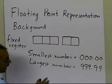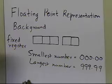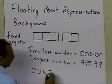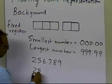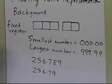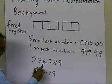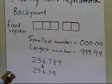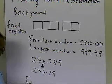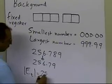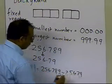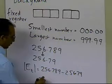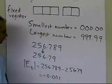Now, if you had a number which had more than two decimal places — let's suppose you had 256.789 — what you would have to do is represent that number as 256.79 if you were rounding it off. If you were rounding off that number, not chopping it, this would get represented as 256.79. The absolute true error in this case would be 256.789 minus 256.79, which gives an error of minus 0.001.